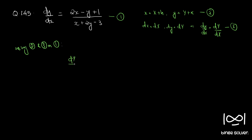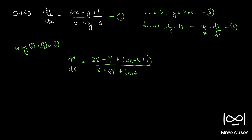Using Equations 2 and 3 in Equation 1 we have dY/dX equals (2X minus Y plus 2h minus k plus 1) by (X plus 2Y plus h plus 2k minus 3). We just substituted small x with capital X plus h and small y with capital Y plus k. Let's call this Equation 4. Equation 4 is not a homogeneous form, but if we choose h and k such that 2h minus k plus 1 equals 0 and h plus 2k minus 3 equals 0, then Equation 4 becomes a homogeneous form.